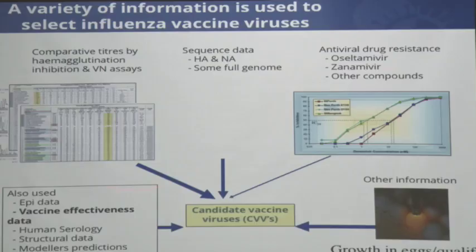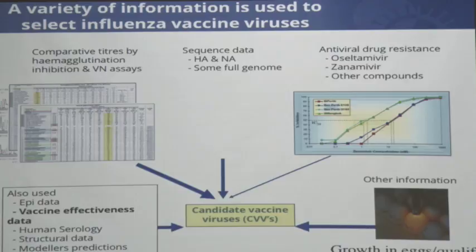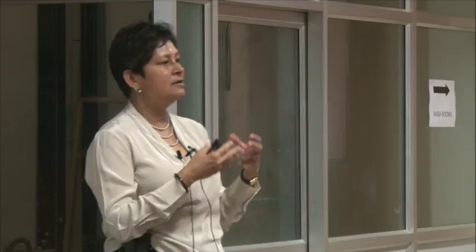How do we characterize these viruses? We look by hemagglutination inhibition or virus neutralization whether the viruses react well with antiserum raised against last year's vaccine. We do a lot of HI and virus neutralization, and much more now than before of sequencing, including full genome sequencing. We look at antiviral drug resistance, and now all the labs are also collecting information from epidemiology — looking at how much illness is out there and also collecting in real time how well the vaccine is performing.